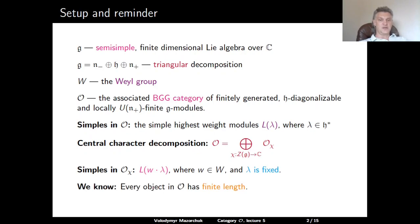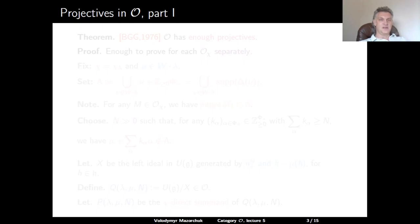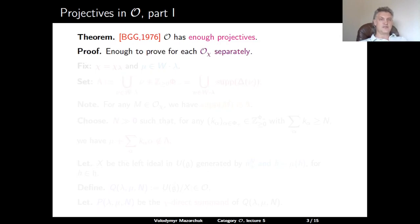Every object in O has finite length. Our first observation is the following theorem from the original paper of BGG: Category O has enough projective objects. In other words, every object in O is a quotient of a projective object. It suffices to prove this for each block O_χ separately. We fix a central character χ, which is the central character χ_λ of the simple highest-weight module L(λ).